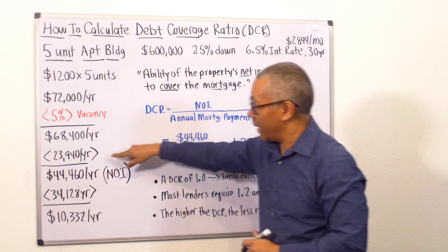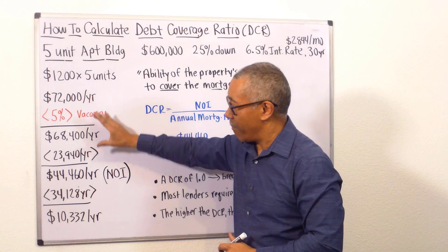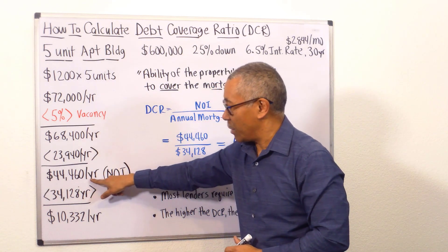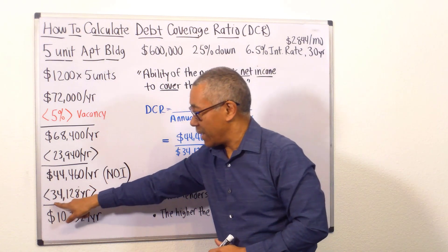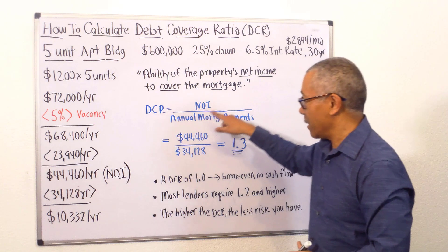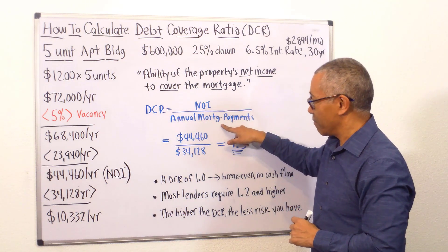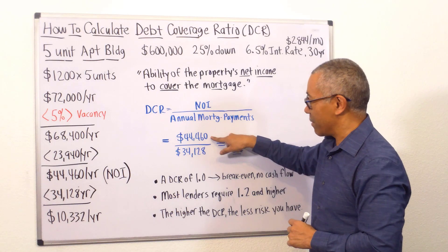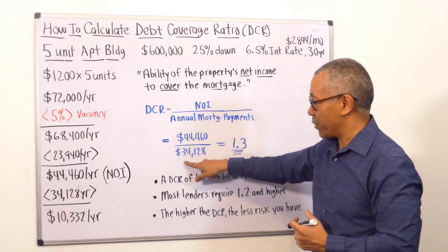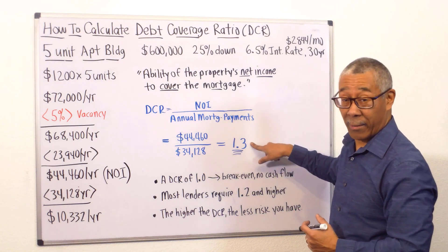Your NOI is your income minus expenses. You want that number — the $44,000 — to be somewhat greater than your annual mortgage payments of $34,128. So NOI divided by annual mortgage payments: $44,000 divided by $34,128.